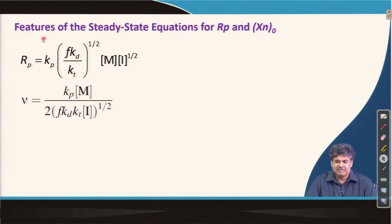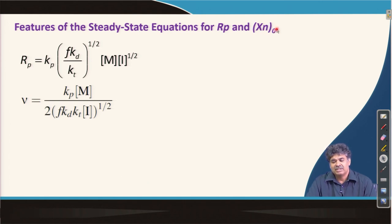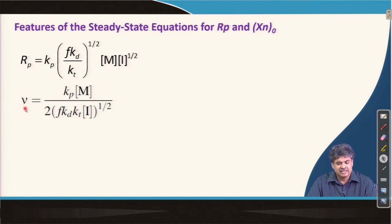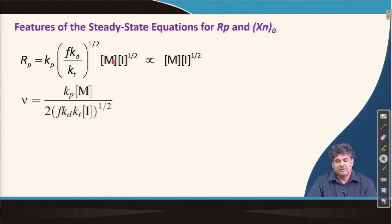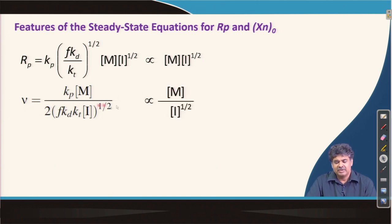Now let us discuss features of the steady-state equations for rate of polymerization and degree of polymerization. The degree of polymerization X_n(0) refers to degree of polymerization in the absence of transfer reactions. The rate of polymerization depends on monomer and initiator concentrations, while molecular weight or degree of polymerization depends on their ratio.